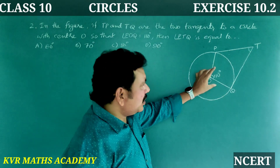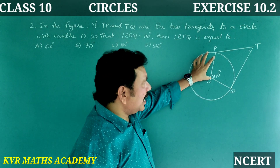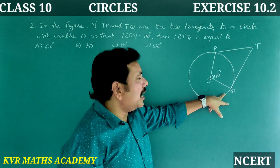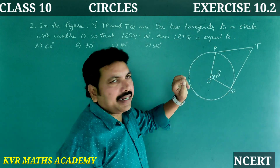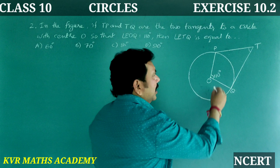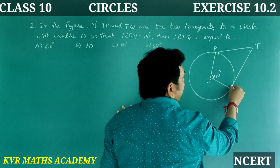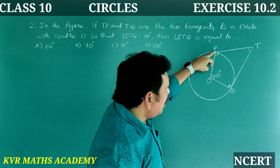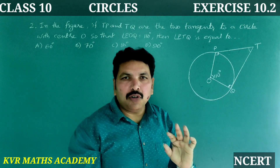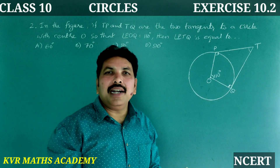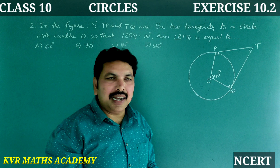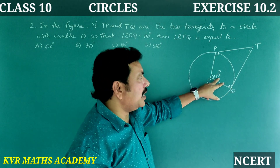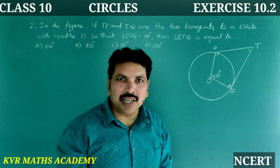O is the center of the circle, and TP and TQ are tangents. Since TP and TQ are tangents, the angle at the point of contact is 90 degrees, so angle OPT = 90° and angle OQT = 90°. P, O, Q, T form a quadrilateral, and the sum of all angles in a quadrilateral is 360 degrees. Angle POQ is 110°, and the two right angles at P and Q sum to 180°.